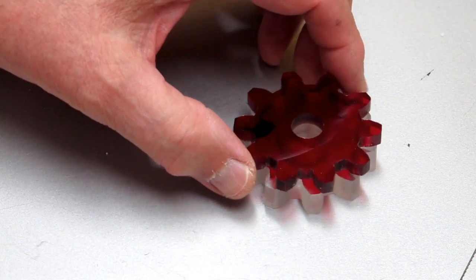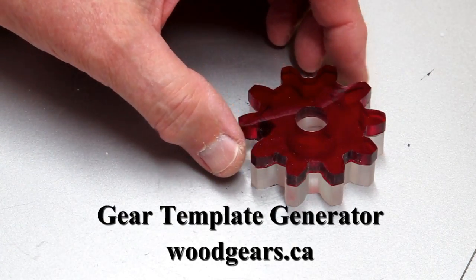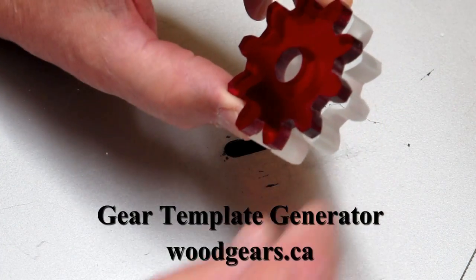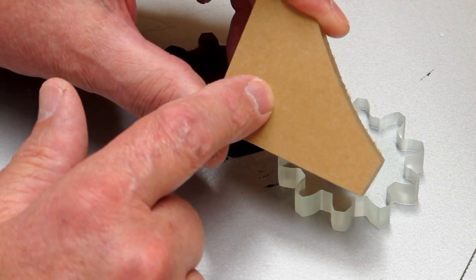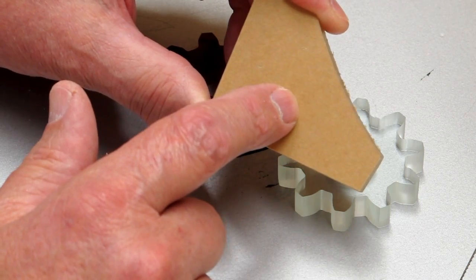These two gears are exactly the same form. I used Matthias' gear template generator to make the templates for these. You want to use a material that has a paper backing so that you can glue your pattern onto it.